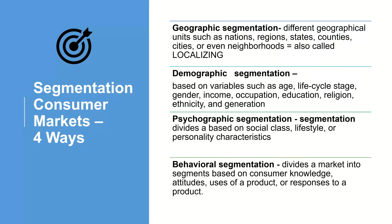There are really four ways to segment consumer markets. Geographic segmentation looks at potential geographic locations such as a region, state, country, or even a neighborhood — all of this is called localization. Demographic segmentation is based off of people's age and lifecycle, gender, income, and occupation. Psychographic segmentation divides by social classes, lifestyle, and personality characteristics. And behavioral segmentation divides a market into segments based off of knowledge, attitudes, use of a product, or response to a product.